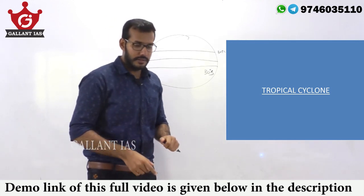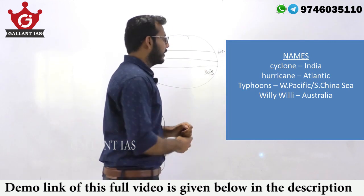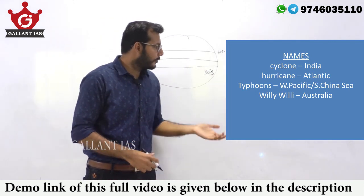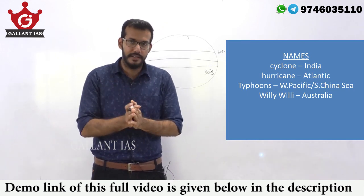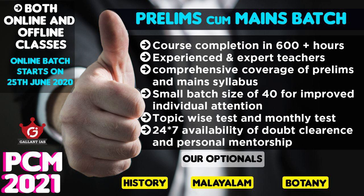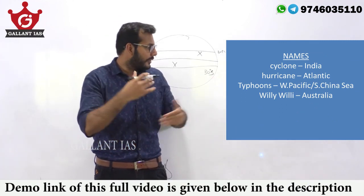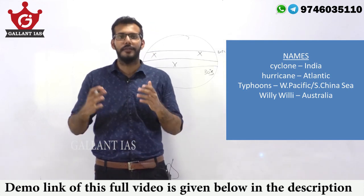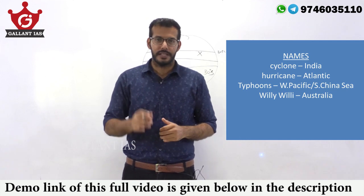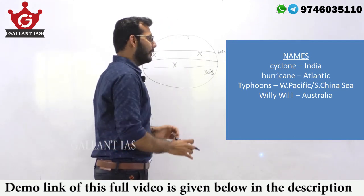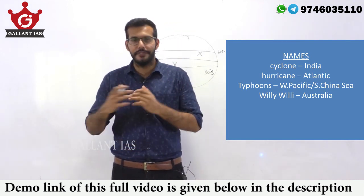Let's start with the names of tropical cyclones. There are different names given to them. They are known as hurricanes, typhoons, and willy-willies. Remember that these are all names of the same phenomenon — the only difference is the place of origin. In the Indian Ocean, a cyclonic depression is known simply as a cyclone. In the Atlantic, it is known as a hurricane. In the West Pacific and South China Sea, those systems are known as typhoons. In parts of Australia, they are known as willy-willies. These are the same phenomenon, known by different names in different parts of the world.